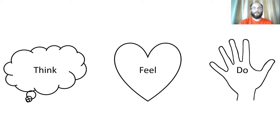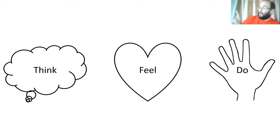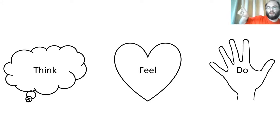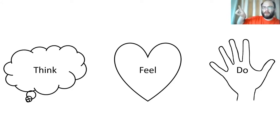To help you remember 'do,' I want you to make a D with your finger. You take your right hand and you can see there's a D. We are going to do all three of them: think, feel, do. Think, feel, do. Let's do it a little bit faster: think, feel, do. I want you to remember those three words in that order — think, feel, do.